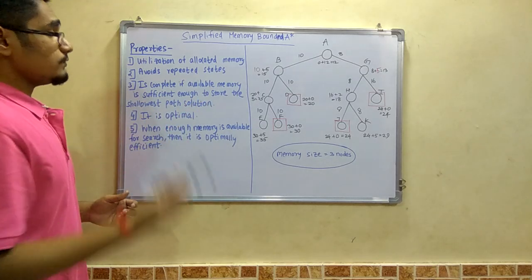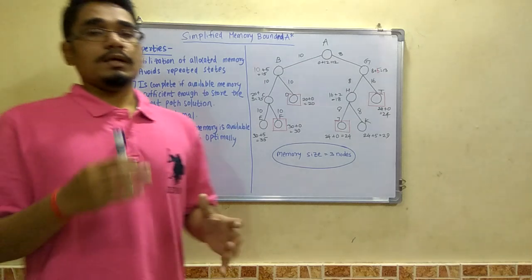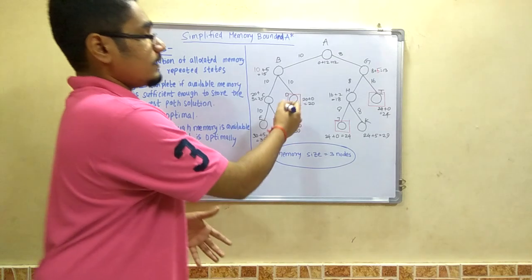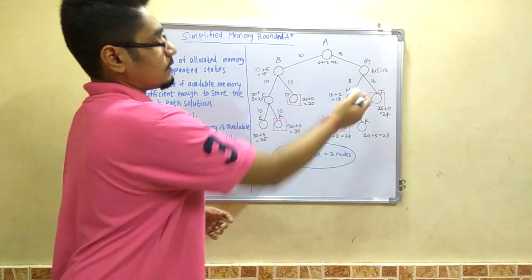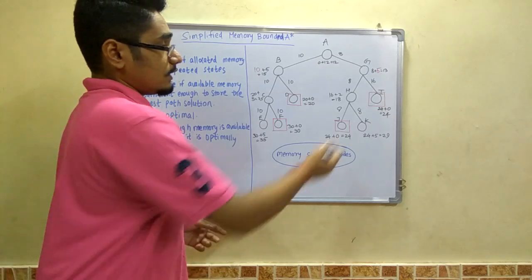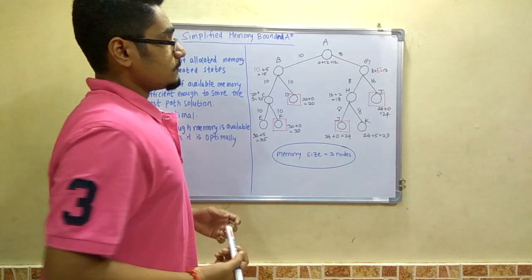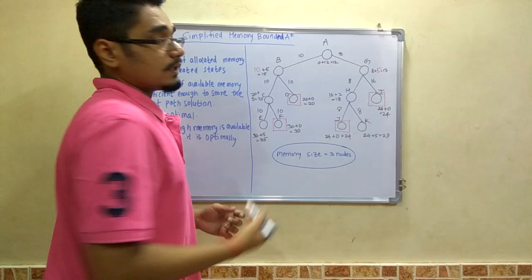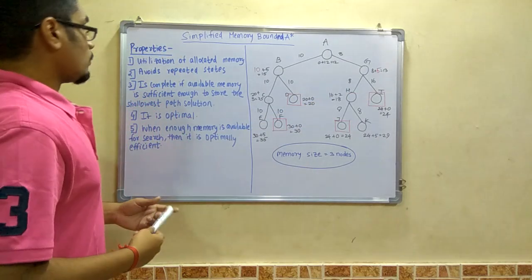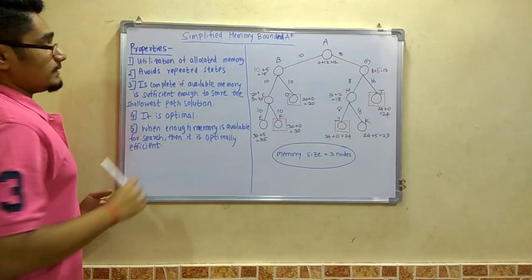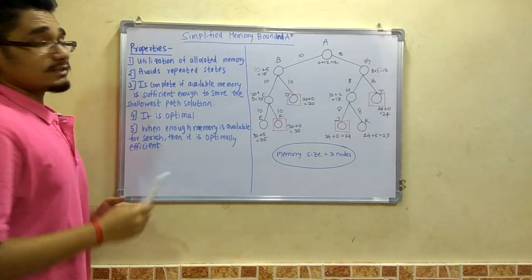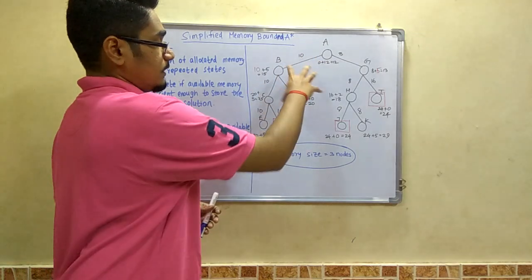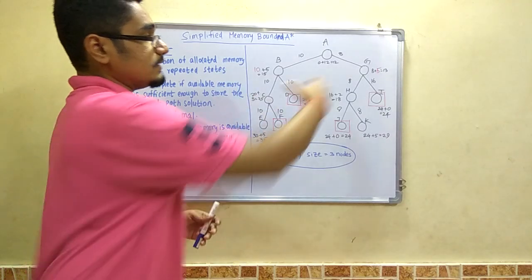Next, it is complete if the available memory is sufficient enough to store the shallowest path solution. For example, in this tree the red boxes denote the goal states. The shallowest path can be one of these marked routes. SMA* is complete if the available memory can store that shallowest path — if one part of the tree is stored, it can easily accommodate the other part as well.